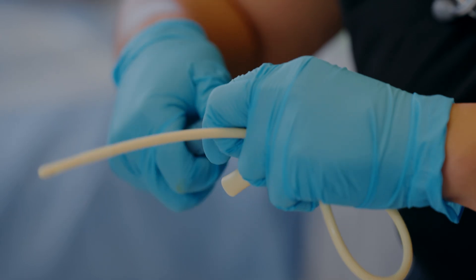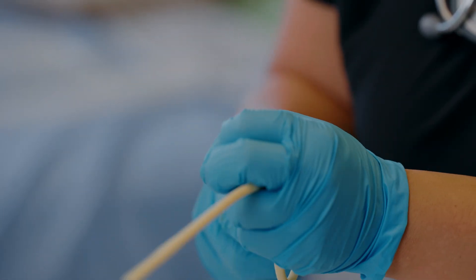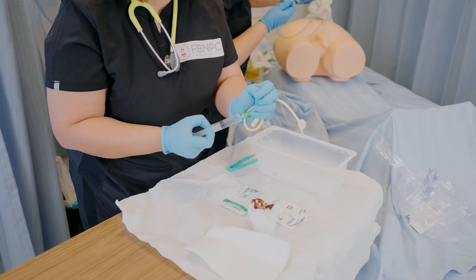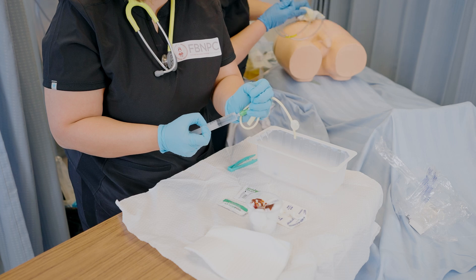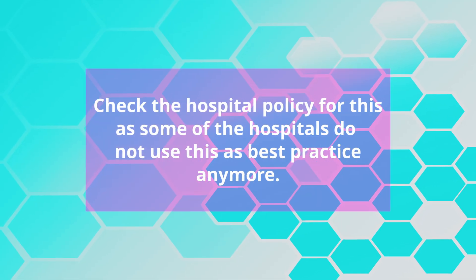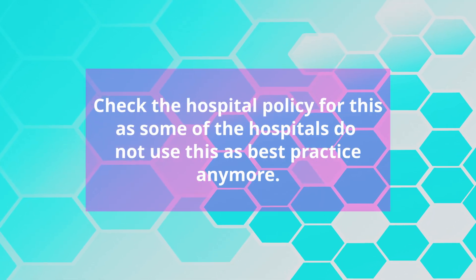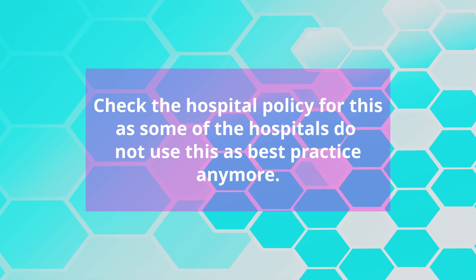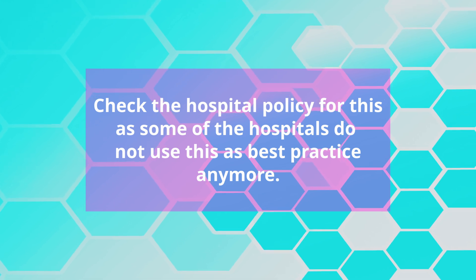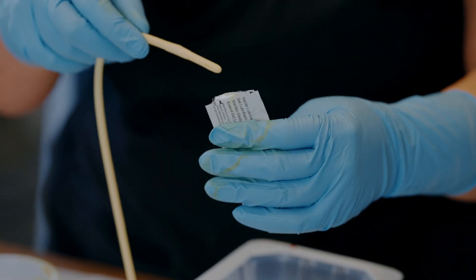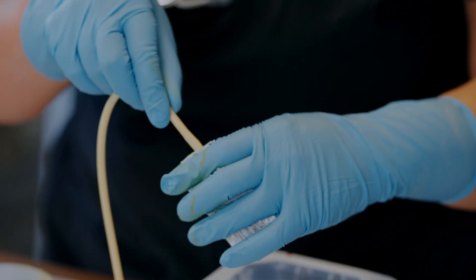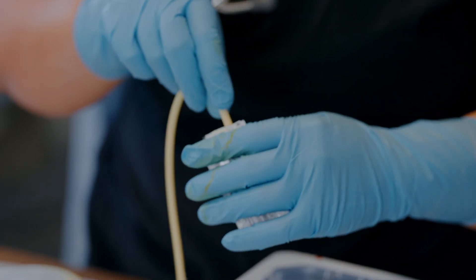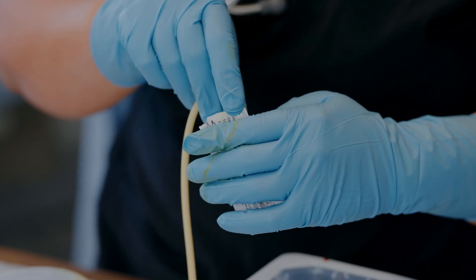Before inserting an indwelling catheter, test the balloon by injecting fluid from the pre-filled syringe into the balloon port. However, check hospital policy for this, as some hospitals do not use this as best practice anymore. Lubricate 12.5 to 17.7 centimeters of the catheter for men.